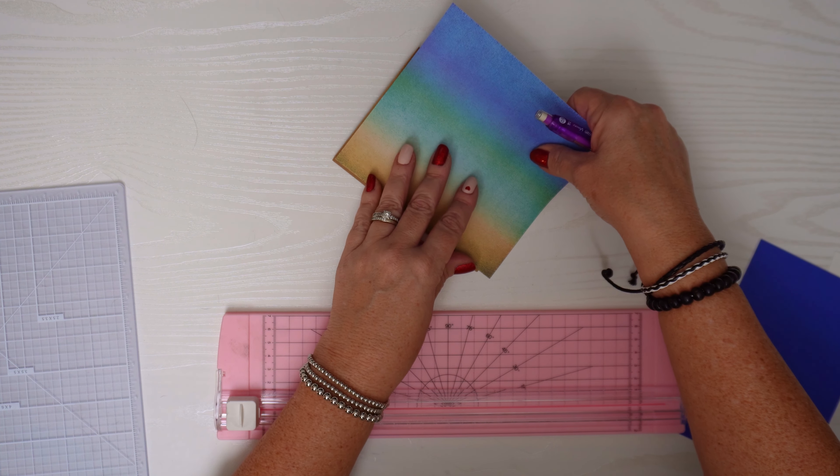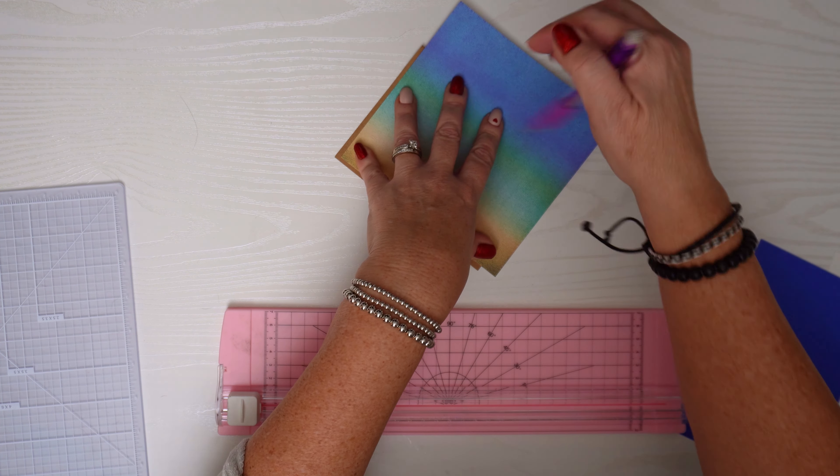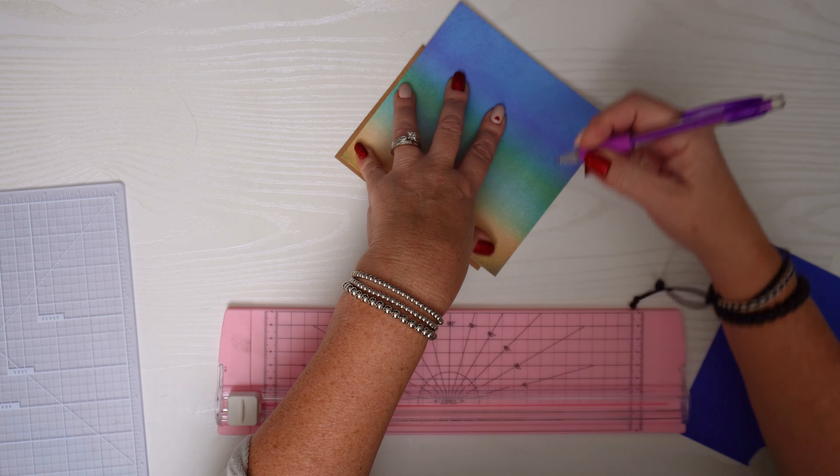Now let's see if I can jazz it up a little bit as this will be to celebrate a retirement. I'll fold the card base so I can cut it in half with my guillotine paper cutter to get two card bases from this sheet of cardstock. Cutting this in half will give me two A2 card bases.